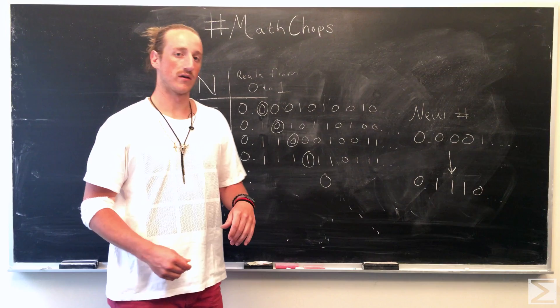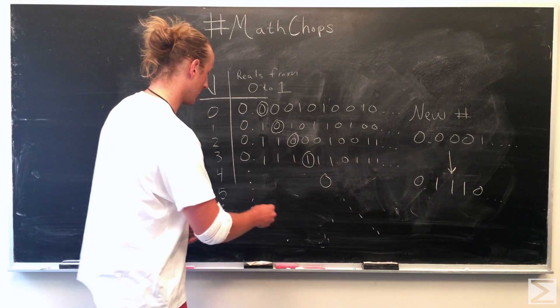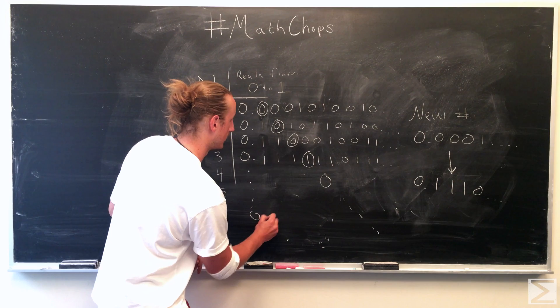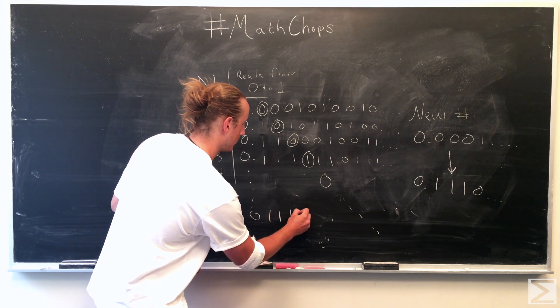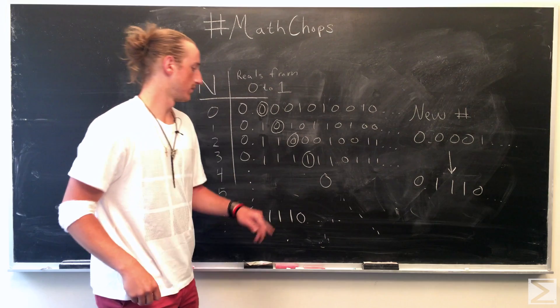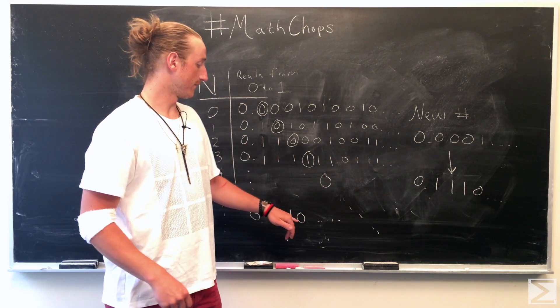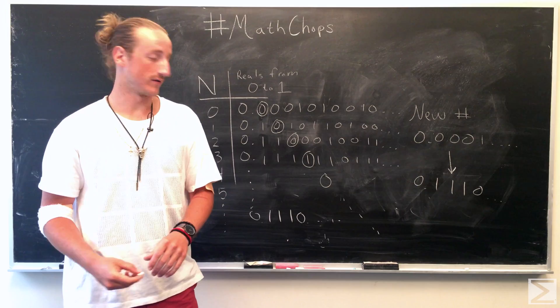So this value would then be added to the list and then you could do it again with this new number. If you were to do the diagonalization again, you'll find another number that is not on this list.